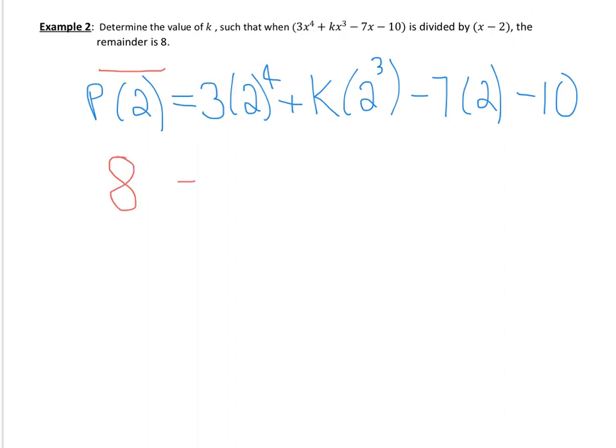So P at 2 actually equals 8. And then we can go through and simplify, and we will be able to actually solve for k. So 2 to the 4 is 16 times 3 is 48. We have our k, and I'm just going to actually write it as 2 to the 3, which is 8k, so that hopefully you can see exactly how we evaluate. Minus 14 minus 10. We'll do some simplifying here.